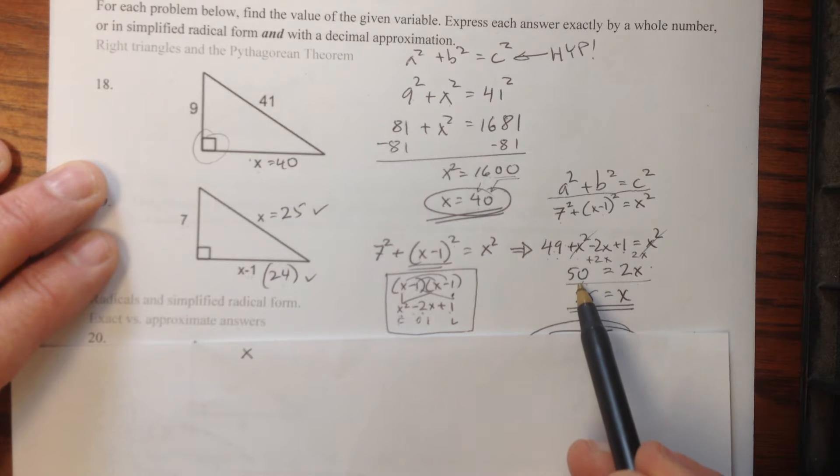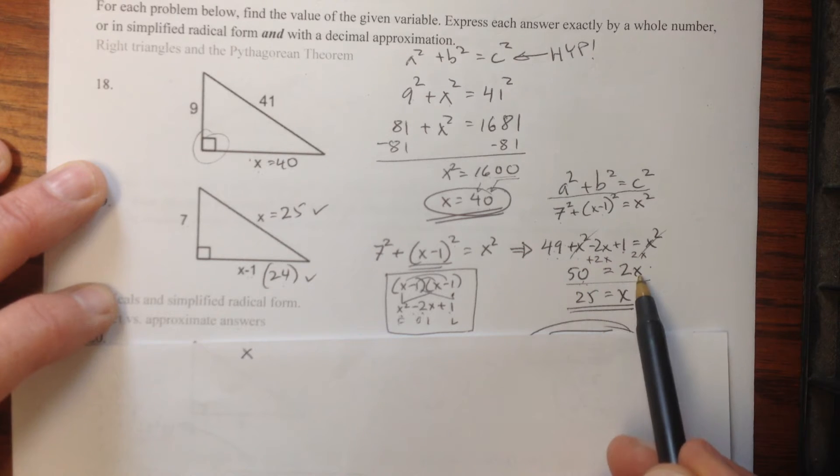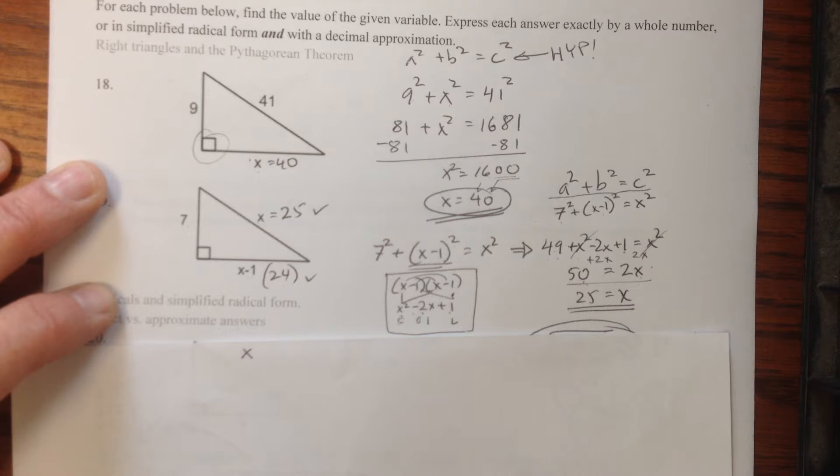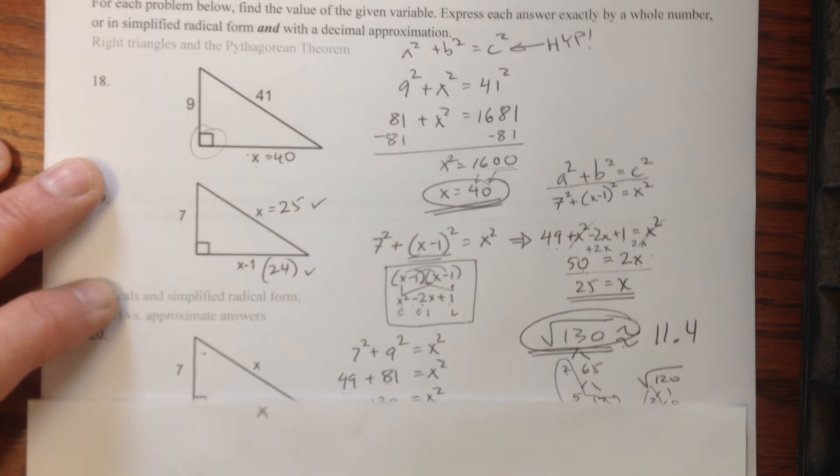Well, 1 plus 49 is 50. I move the minus 2x over to the opposite side and divide by 2. Turns out x is 25 and x minus 1 is 25 minus 1. That's 24.